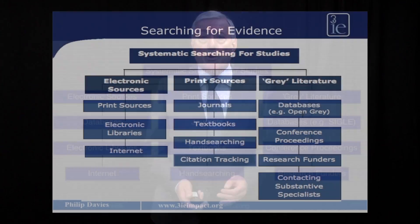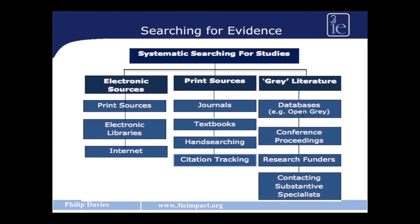Let me tell you about how we go about searching for evidence. On the screen you can see there are three columns — we often call these the three arms of searching. On the left hand side we have electronic sources, consisting of scientific databases across the area of social and political science. We also have electronic libraries such as the Cochrane Collaboration, the Campbell Collaboration, and indeed 3IE's own systematic reviews database and our database of impact evaluations.